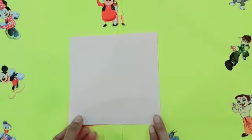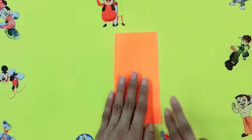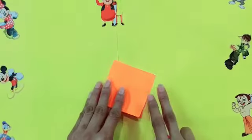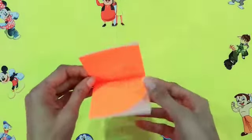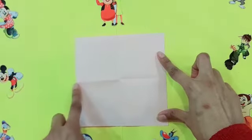Children, first we fold the origami sheet like this, and we will unfold it to get the center crease.